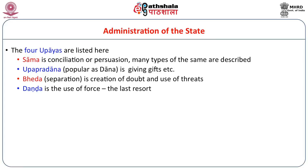To get something done, these are the four devices taught by Kautaliya: Sama (reconciliation), Dana (also called Upapradana — giving something), Beda (creation of doubt and use of threats), and finally Danda (punishment, the last resort).